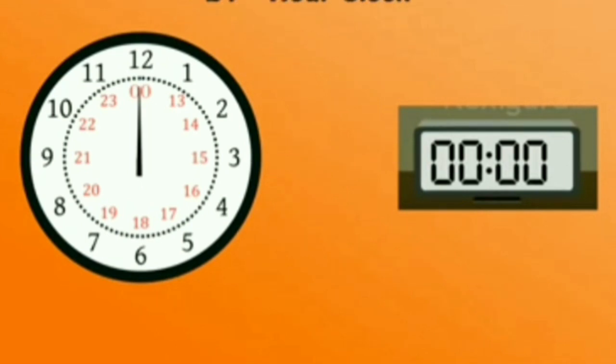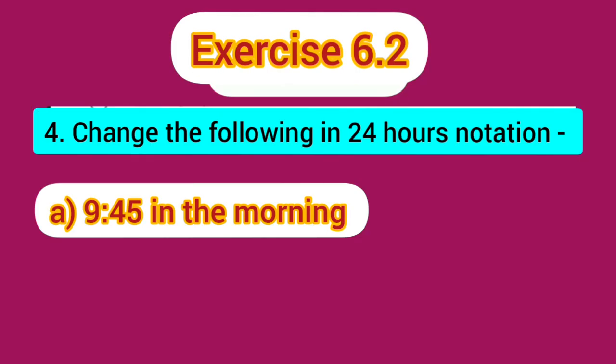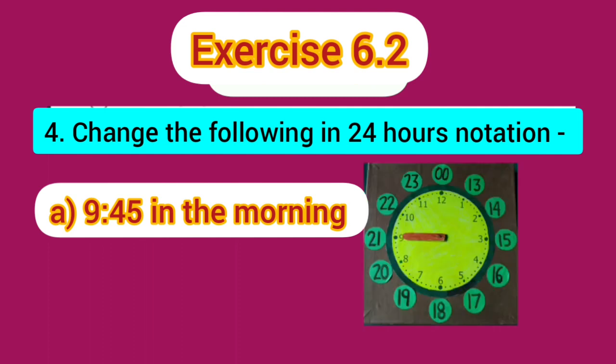Now, we will do the textbook exercises today regarding this lesson. From exercise 6.2, we will do question number 4: Change the following in 24 hour notation. The first part is 9.45 in the morning. We have learnt already that in the 24 hour notation, the time from 12 midnight to 12 noon is the same as in 12 hour notation.